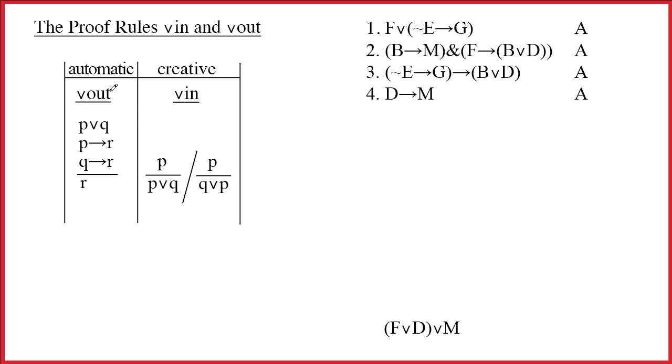This video introduces the wedge out proof rule. Wedge out is our only three-line rule. Every time you see a wedge in your proof, you have to think about this rule. And it requires that you go look for two relevant conditionals.